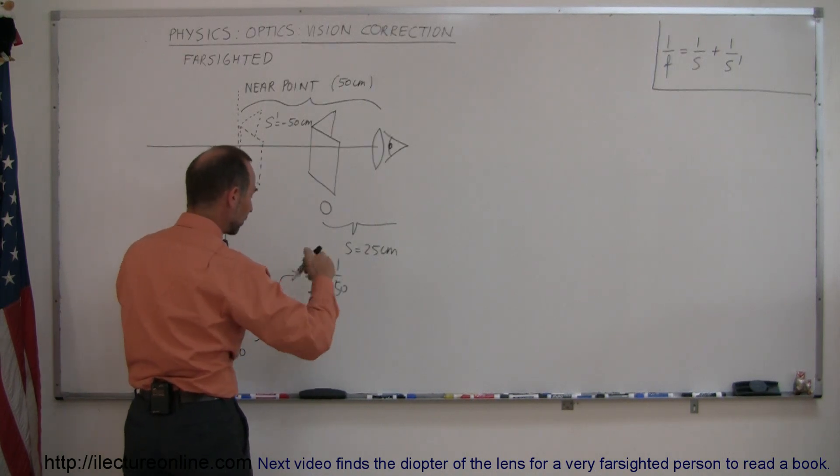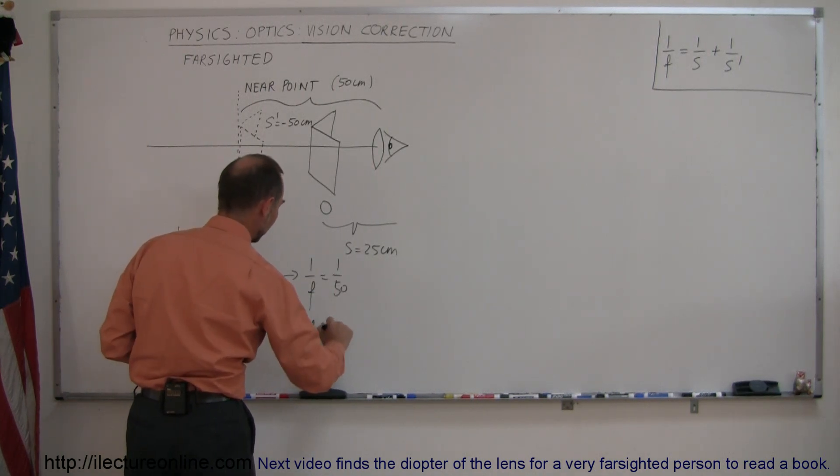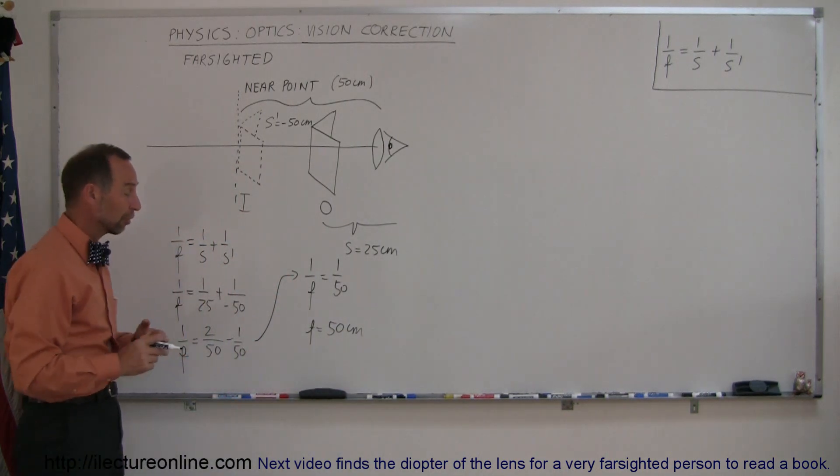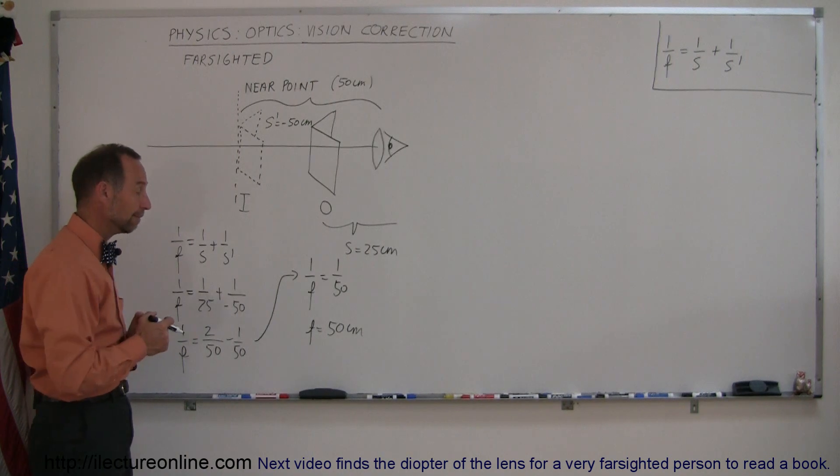And then if we flip the equation around we have f is equal to 50 over 1, or 50 centimeters. So you need a converging lens that has a focal length of 50 centimeters.